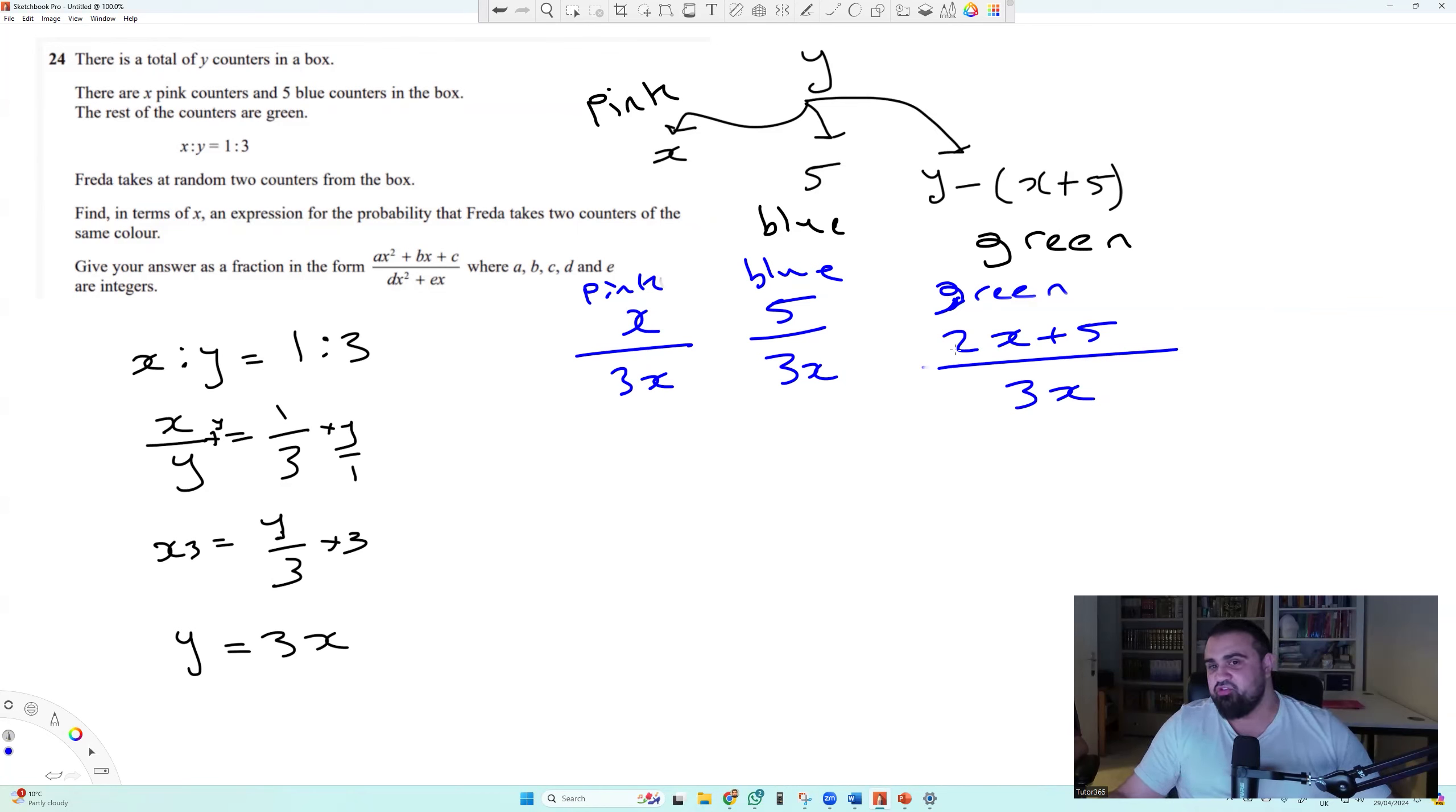Now, this was basically the hard, the grade nine bit. Everything else after, once you've got this, everything else is easy. So Kweli, you take it away. What do I do after this now? So what we do now is we find the probability that he takes two pinks, two blues, or two greens. Exactly. If he finds two counters of the same color.